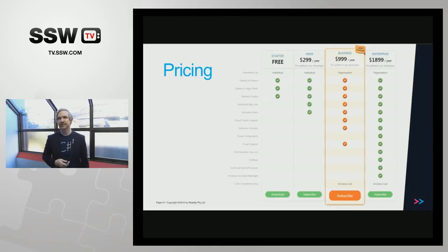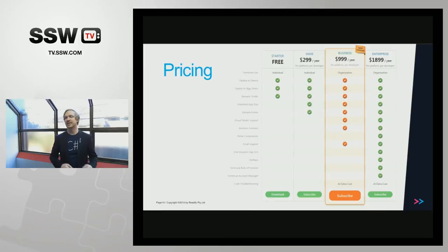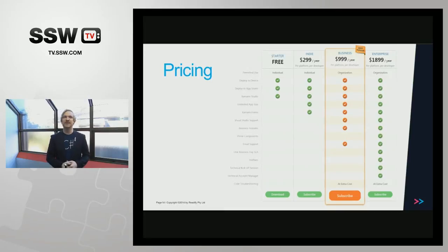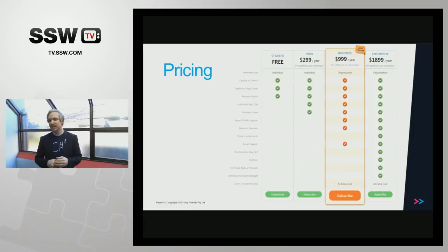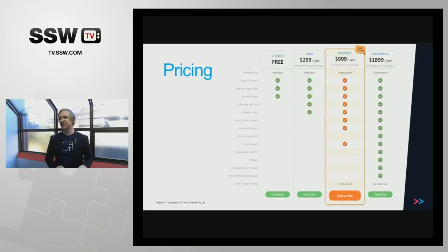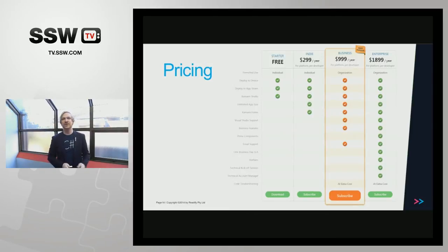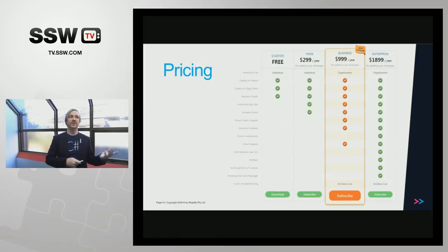Next is pricing. Most of you probably aren't affected since someone else pays. There are a couple of different levels — you can download the free version to get started, but the free version limits your app size. When you pull in things from NuGet and your application grows, you need to upgrade to the indie level, which is one license per user per platform — so targeting both Android and iOS requires two licenses. The business level is the only one that gives you integration in Visual Studio, and at the enterprise level you can do WCF interactions.